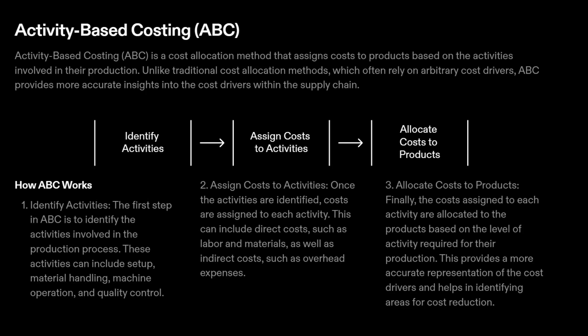Activity Based Costing, ABC, is a cost allocation method that assigns costs to products based on the activities involved in their production. Unlike traditional cost allocation methods, which often rely on arbitrary cost drivers, ABC provides more accurate insights into the cost drivers within the supply chain.